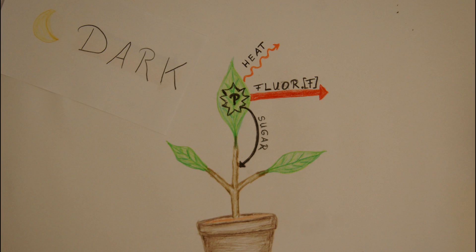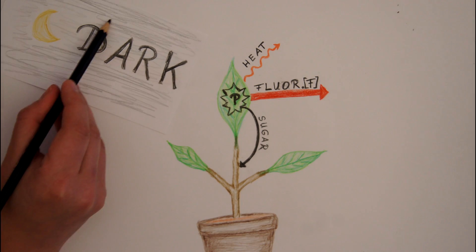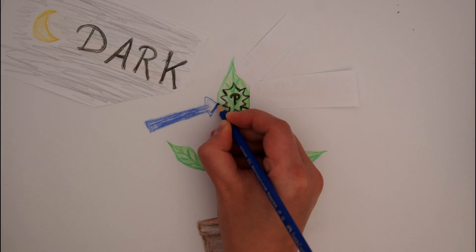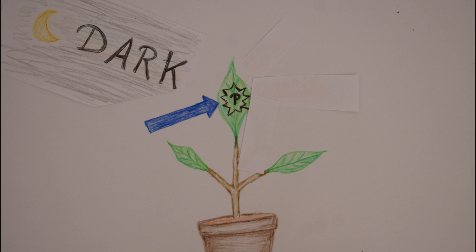First we put the plant in darkness. That means photosynthesis stops and no sugar, heat or fluorescence is generated. Now we activate a blue light, which has no red part, thus does not superimpose the red light of the fluorescence.